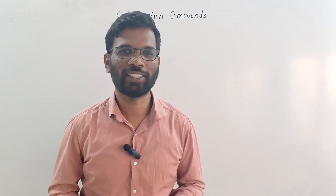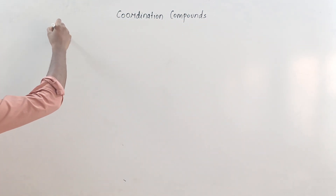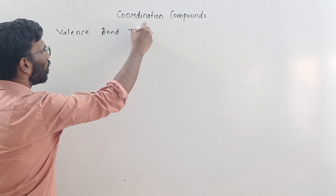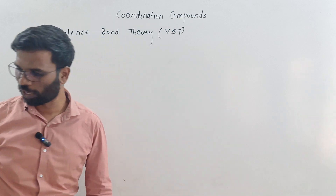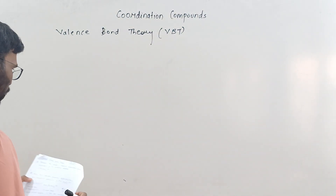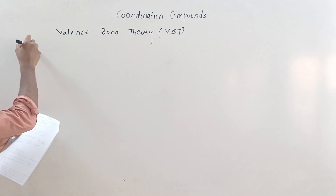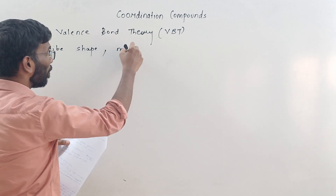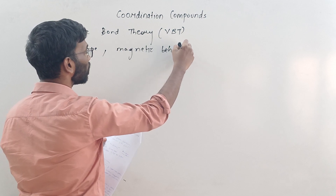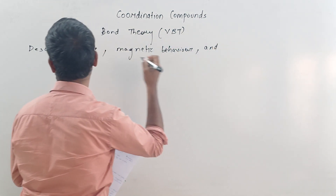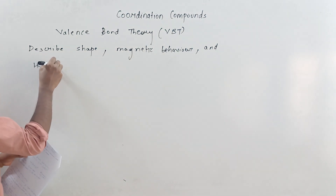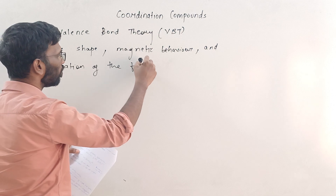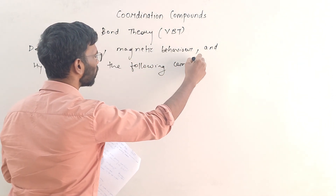Hello students. In this lecture let's revise Valence Bond Theory, in short VBT. We will take one question and directly solve it. The question asks: describe the shape, magnetic behaviour, and hybridisation of the following complex.